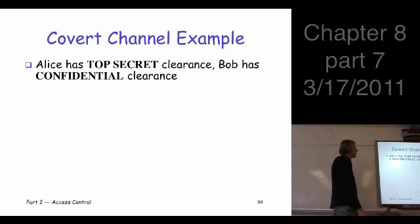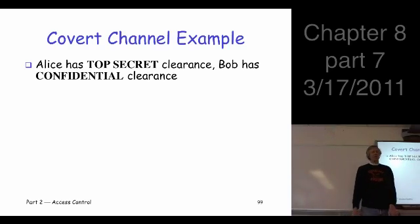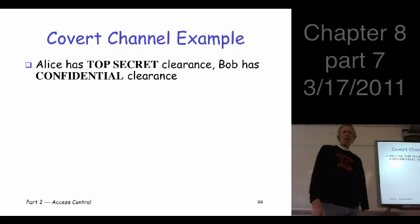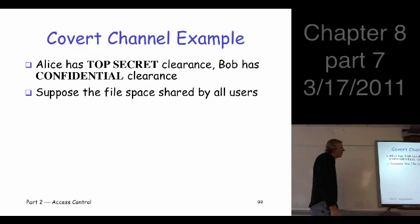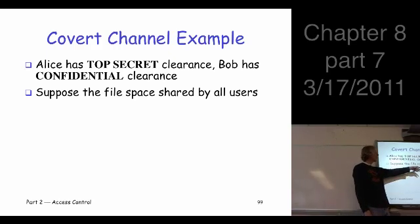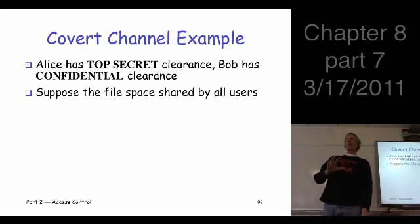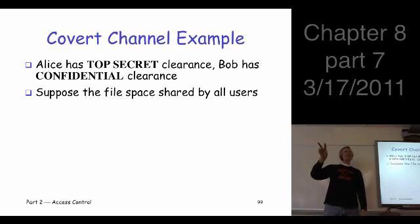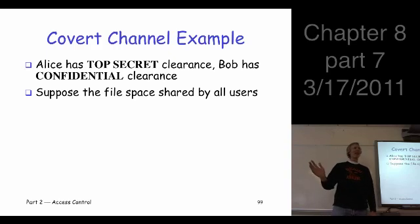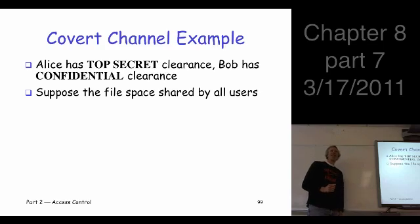Here's an example. Alice has a top secret clearance. Let's suppose Bob got downgraded and just has a confidential clearance now. And let's say the file space is shared — this is the situation where we use multi-level security, where users with different levels of clearance are trying to use the same resources. They can all see the file system. The assumption is you can see what files are out there, but you only get to see the files you have clearance for. You can see the names of all the files regardless of what level they're at, but you can only actually view the ones you're supposed to see.